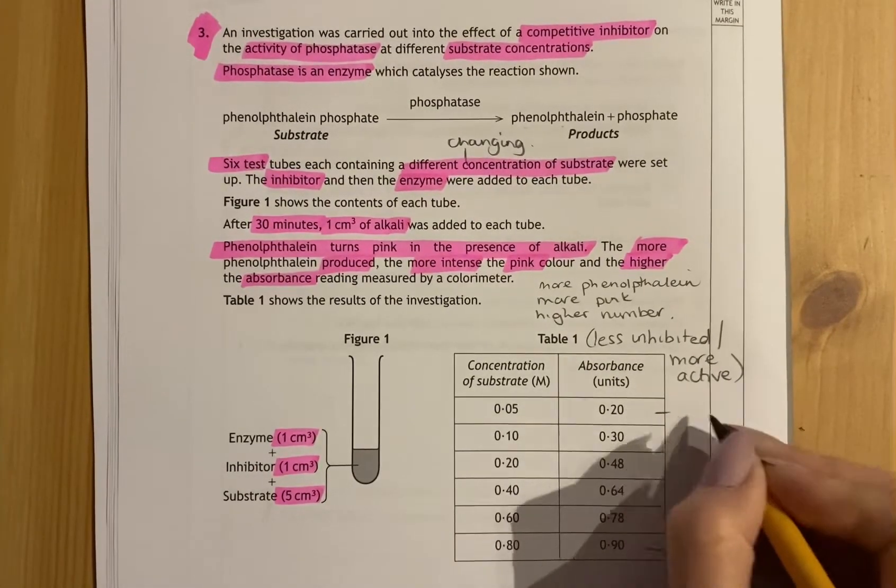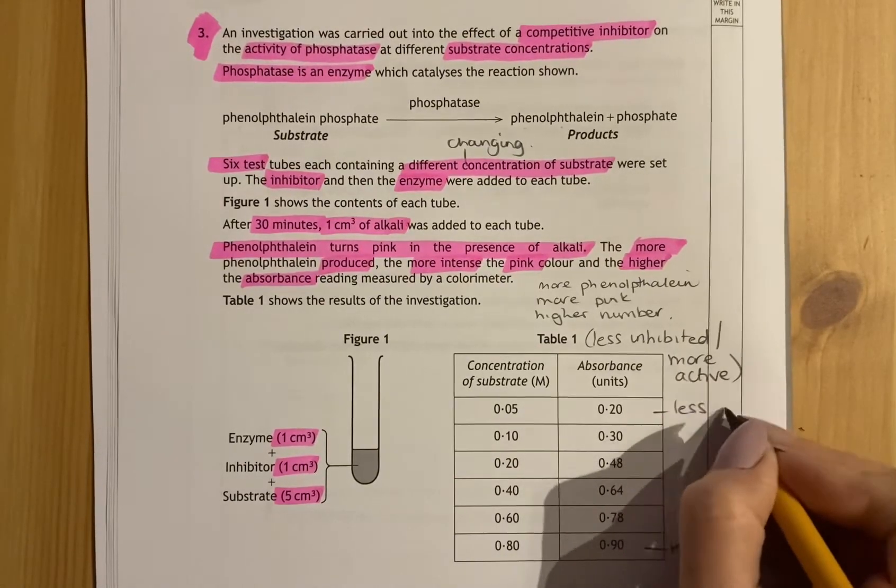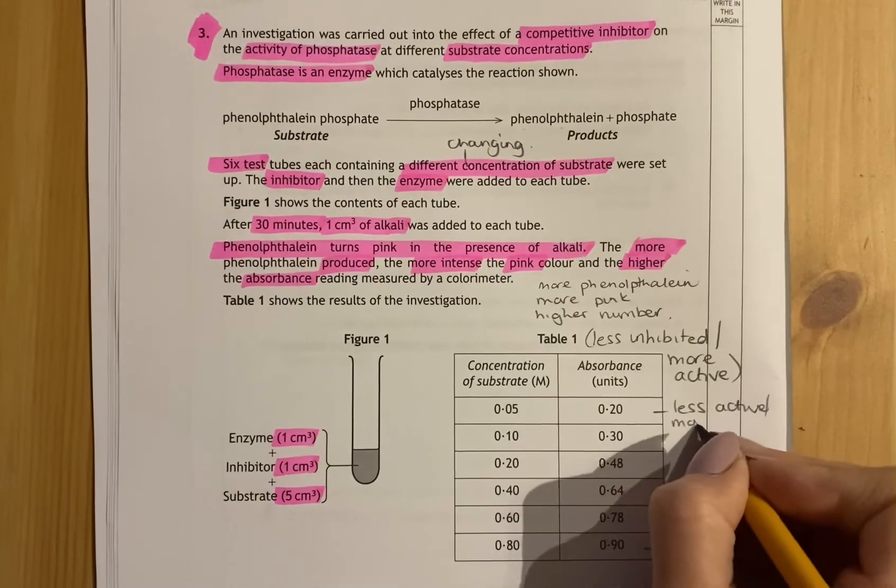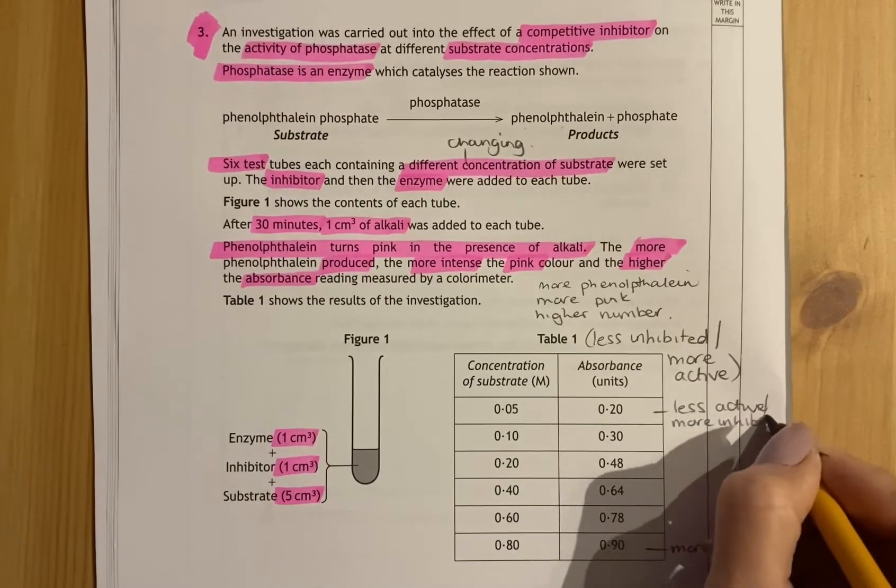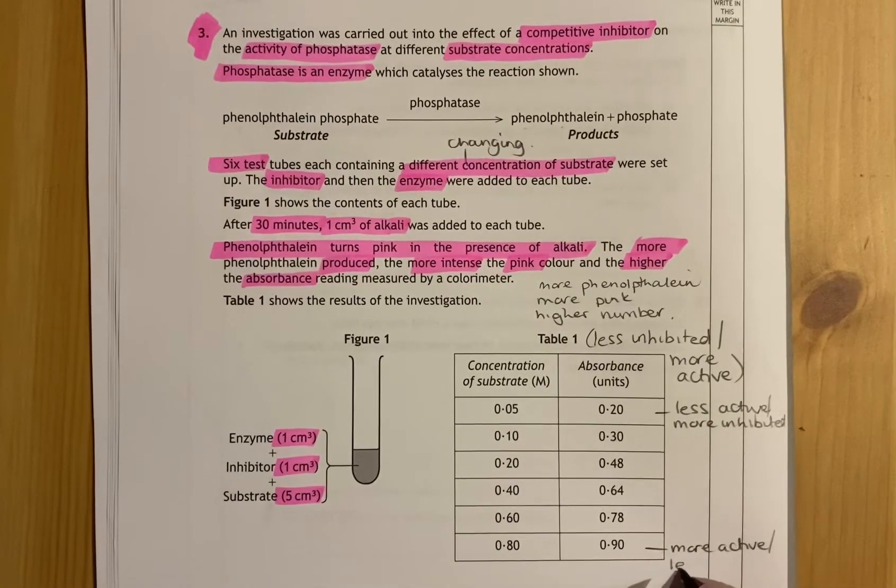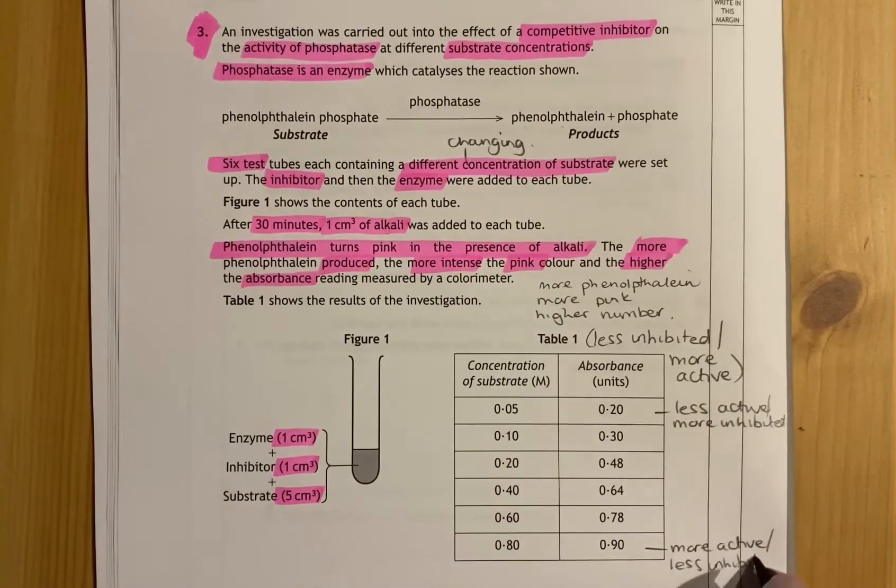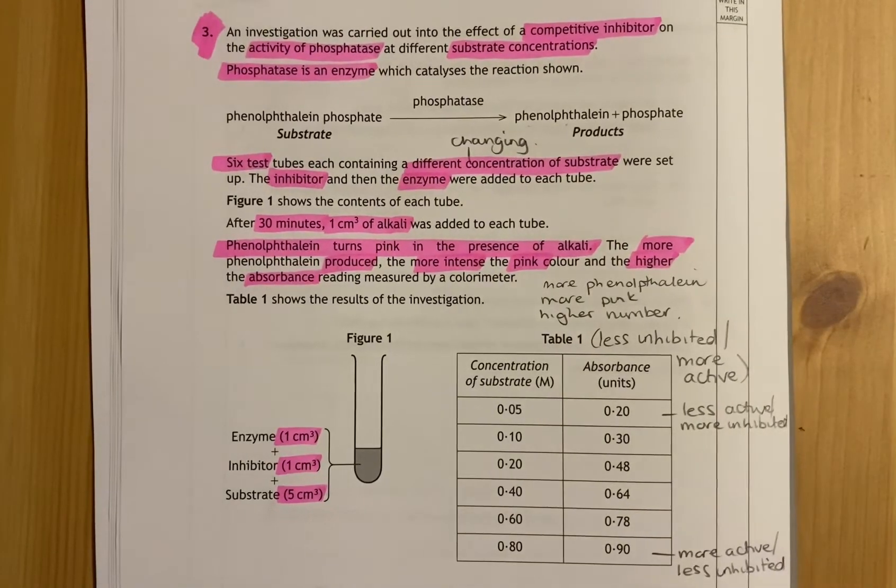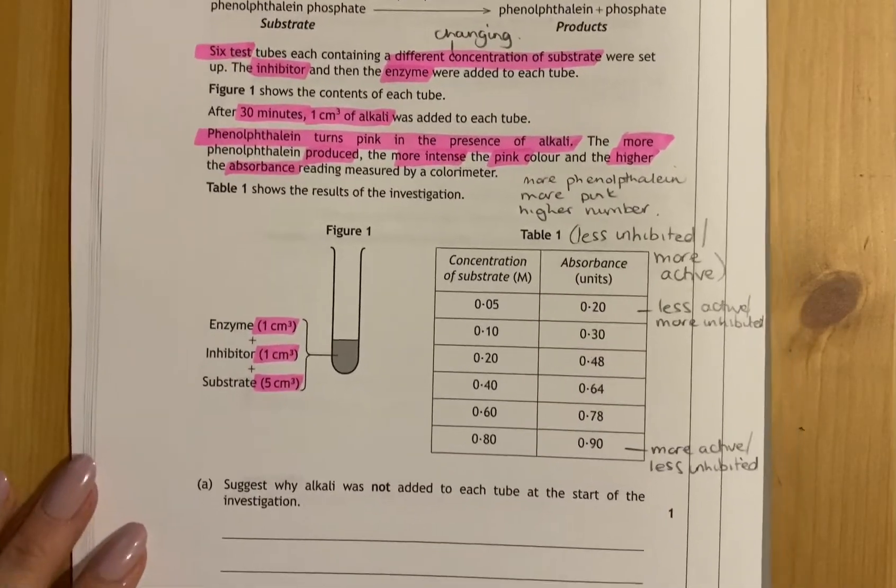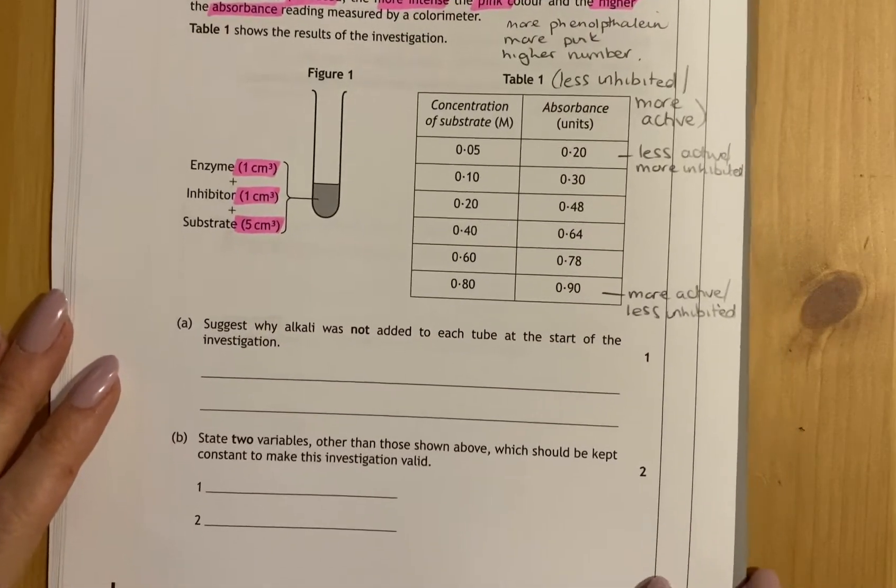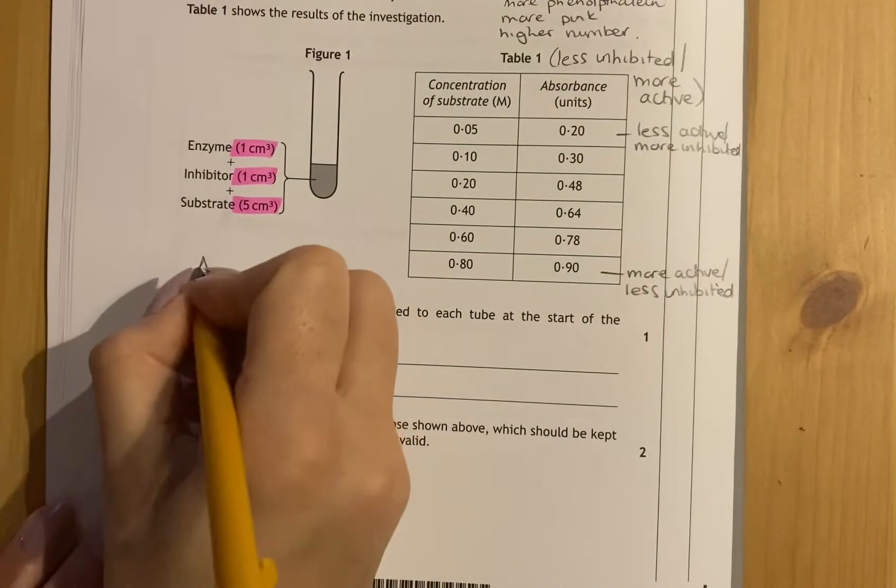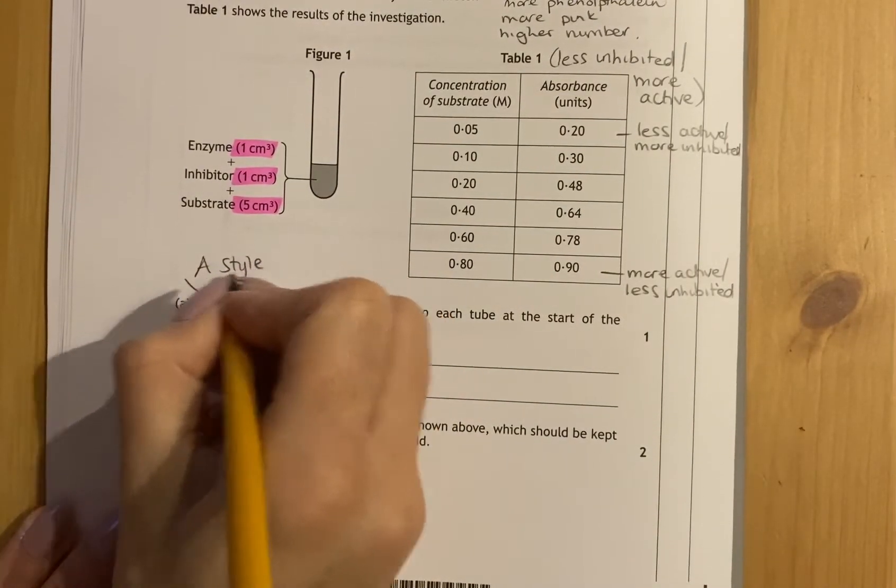That means it's less inhibited or more active. So the higher the number, the more active. This is less active, more inhibited. So more active, less inhibited. This is you applying your knowledge of what these results mean in the experiment. So now to look at the questions. This first one is a suggest question. That is an A style question. These are challenging questions.